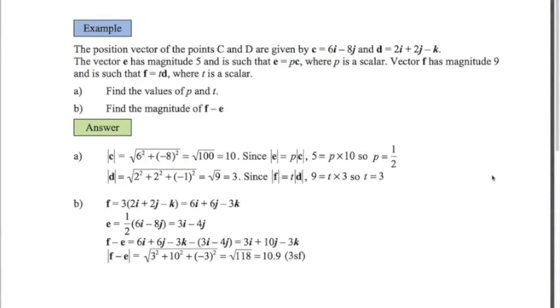If you thought that was pretty easy, it is. So here's something a little bit trickier. We've got two points c and d. I'm giving you the position vectors in terms of i and j. The vector e has got magnitude 5 and is such that e equals p times c where p is a scalar. And f has magnitude 9 and is such that f equals t times d where t is a scalar. Let me break this down for you.